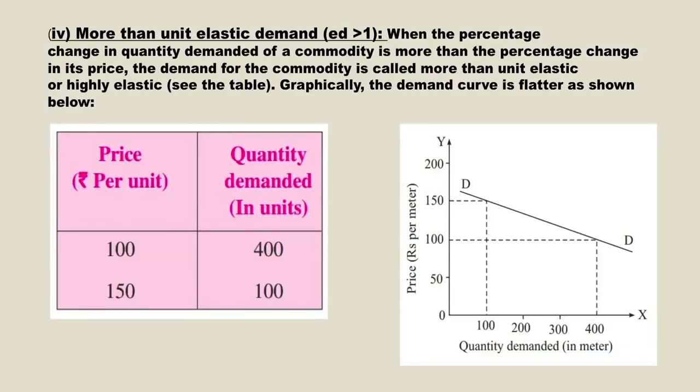The fourth type is elasticity of demand more than one. Here, the quantity demanded increases very highly to a small decrease in price, or decreases very highly to a small increase in price. The table shows quantity demanded decreases from 400 to 100 units for a price increase from 100 to 150. The demand curve is slightly flatter, showing that for a small change in price, the quantity demanded changes very highly.